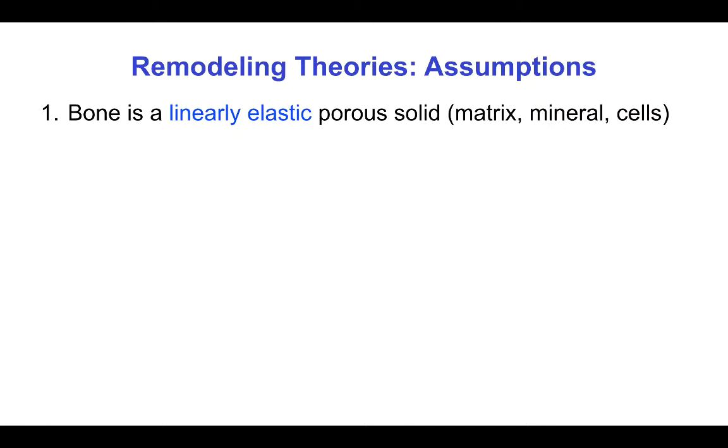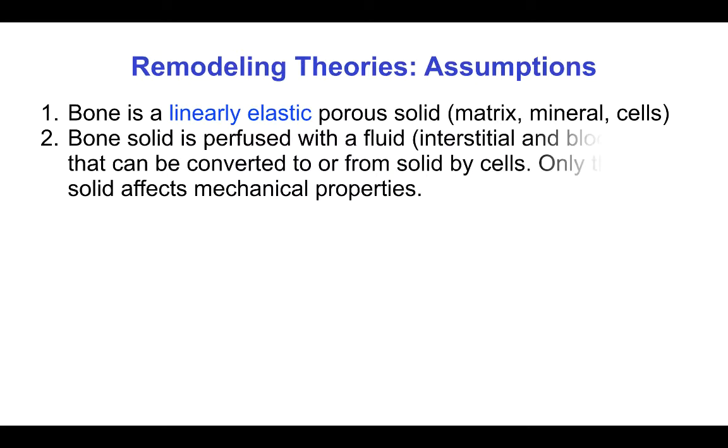There have been a variety of theories for bone remodeling developed and they all make assumptions similar to these. First, the bone is a linearly elastic porous solid consisting of matrix minerals and cells. The bone solid is perfused with a fluid, either interstitial fluid or blood that can be converted to or from solid by the cells.